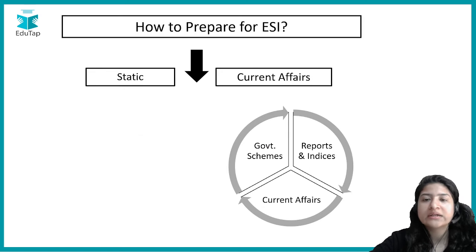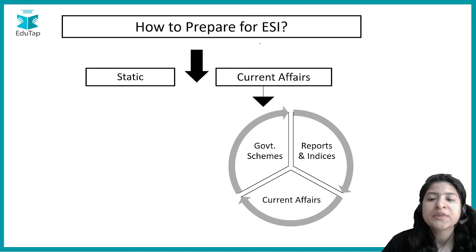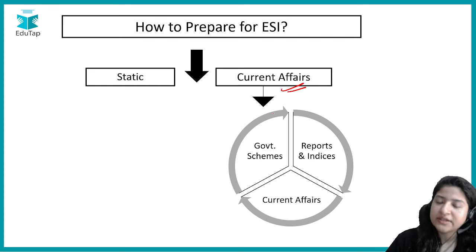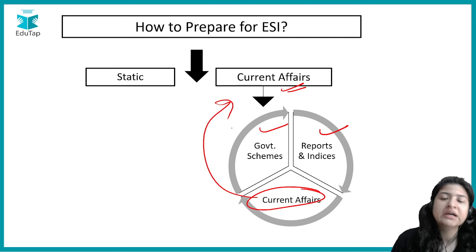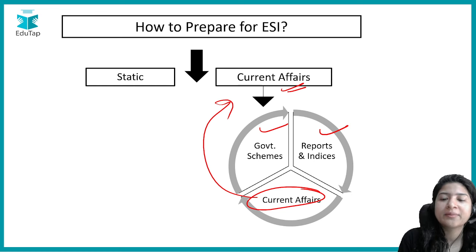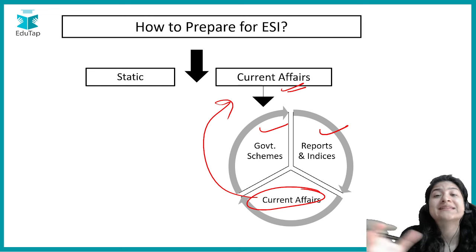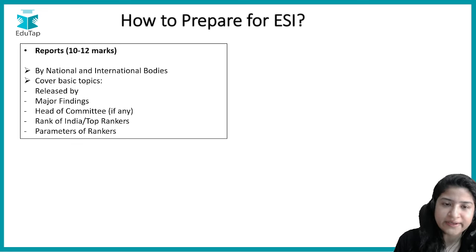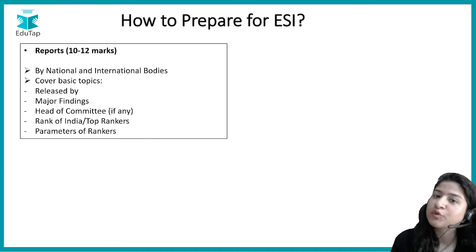Now let's talk about what sorts of current affairs questions are asked. Current affairs can be divided into three categories: government schemes, reports and indices, and current affairs (general ESI news). For reports, always prioritize those that cater to your syllabus — whatever reports have been published regarding the syllabus by any national or international governmental body, those are asked in the examination.